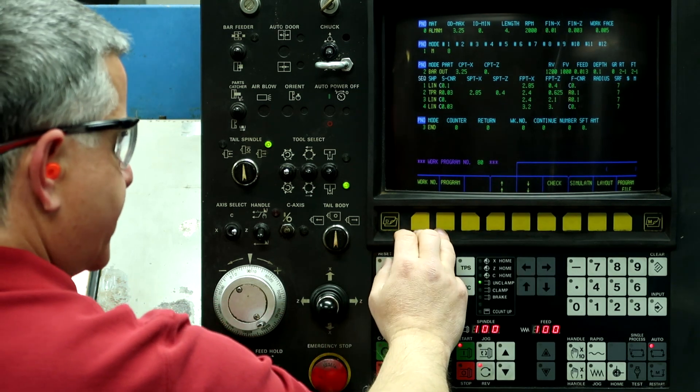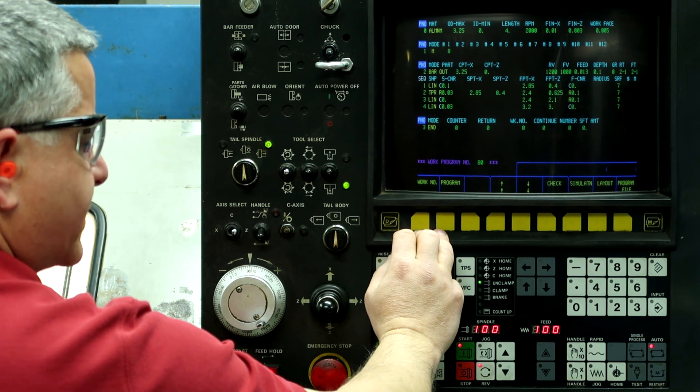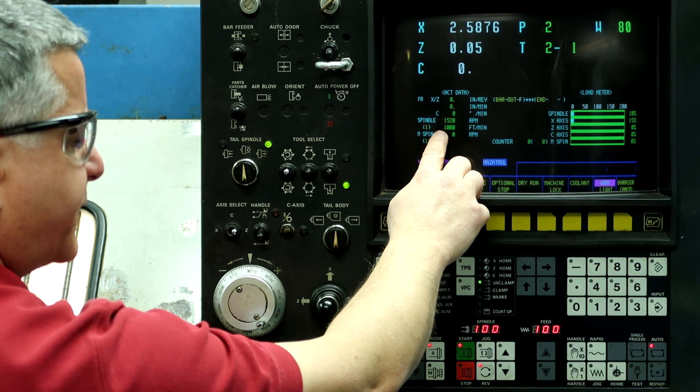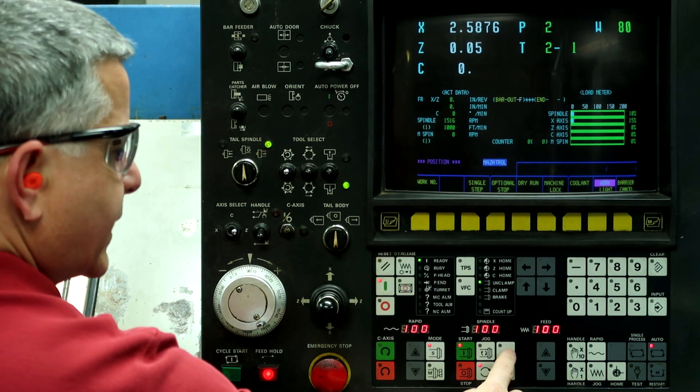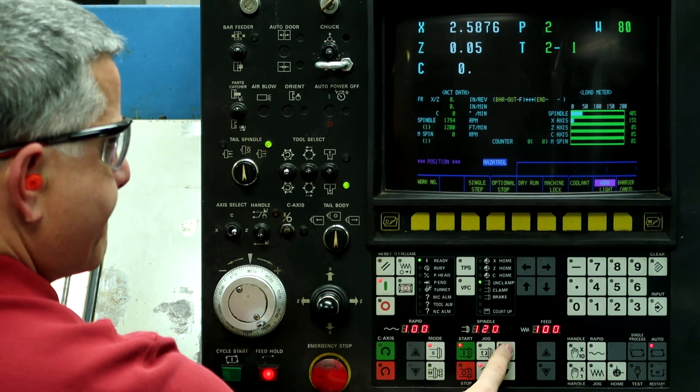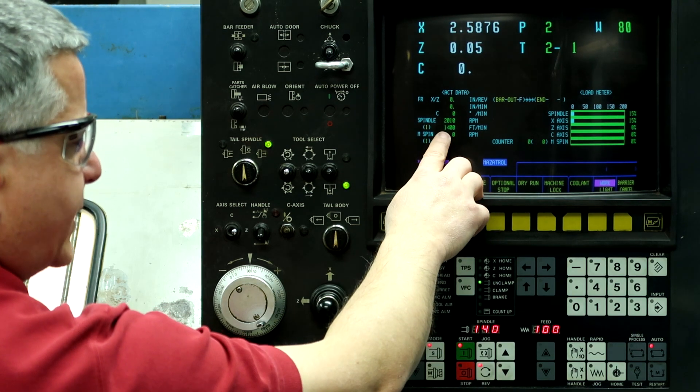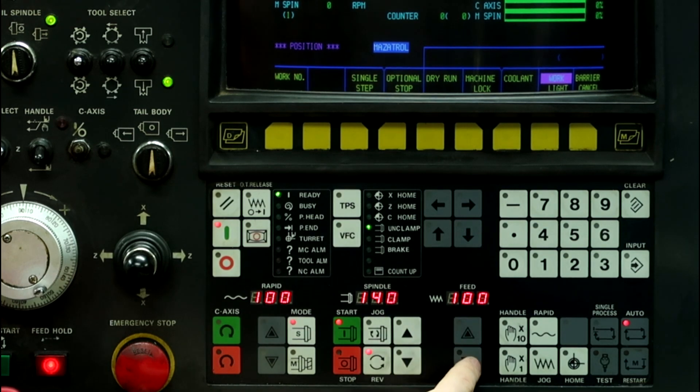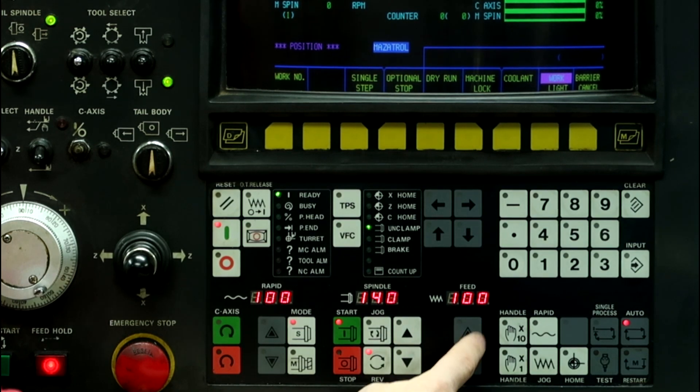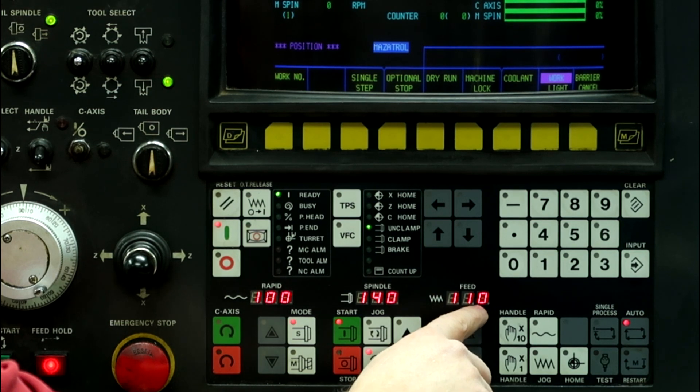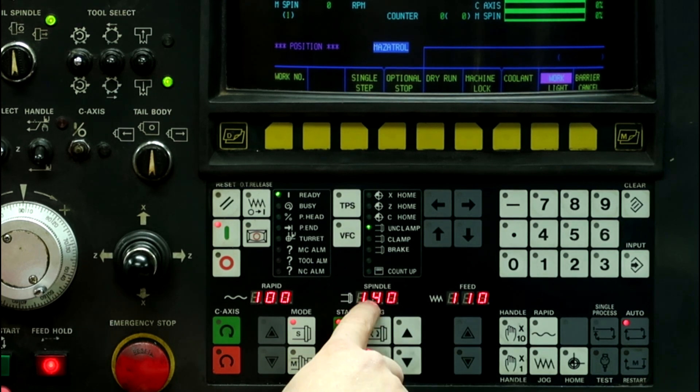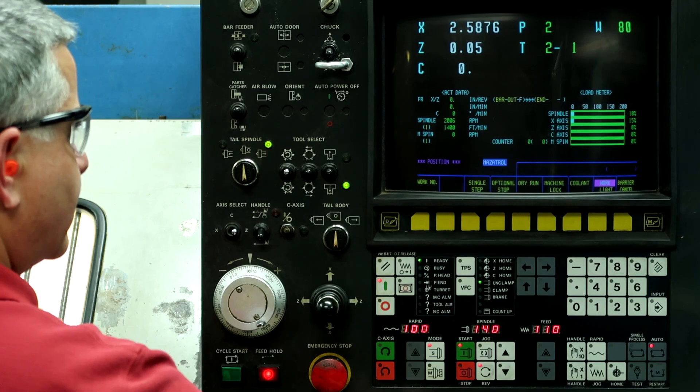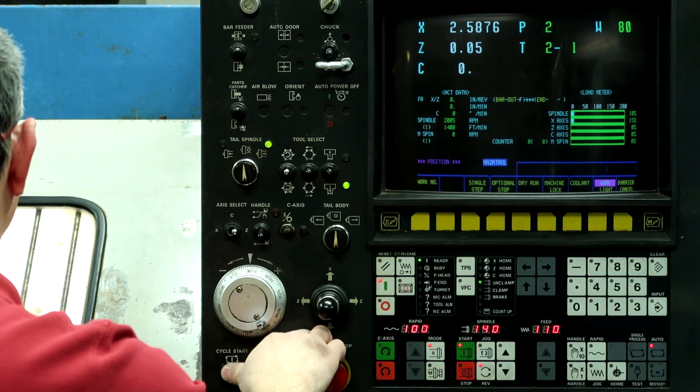So now let's do the finish pass. So go to the position screen. It shows it's down to 1,000 surface feet per minute. We're going to kick that up to 1,400 feet per minute. And we're going to change the feed rate 10%. So 140% and 10%. So now let's hit cycle start.